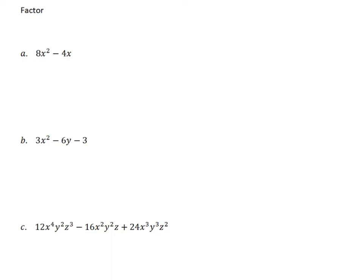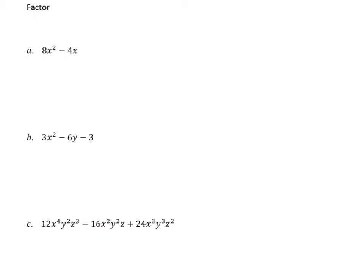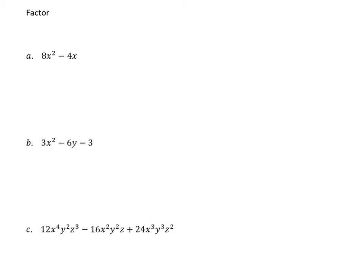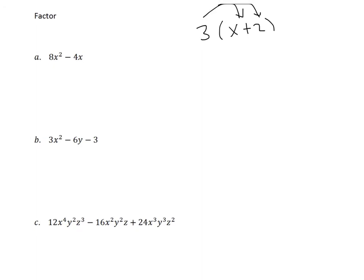We're going to start looking at factoring now. So we did a lot with the distributive property. When you have something like 3(x + 2), when you distribute, what operation is this? When you distribute, it's multiplication. So we're now going to go the opposite direction — the opposite of multiplication would be division.